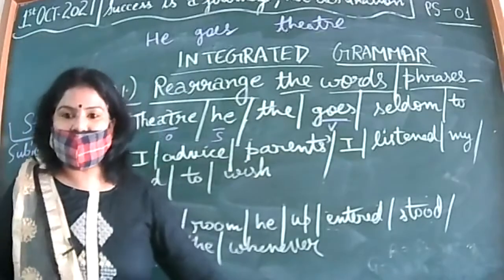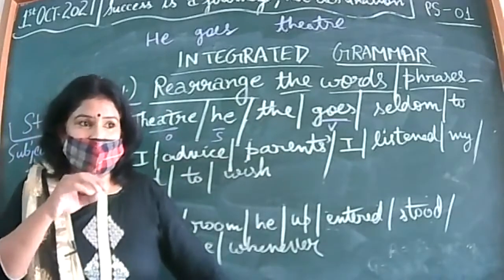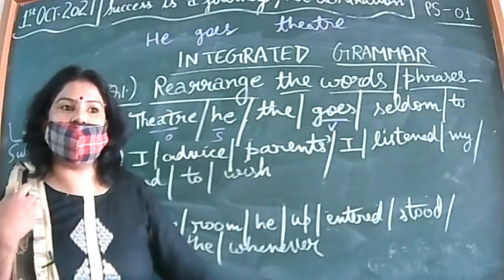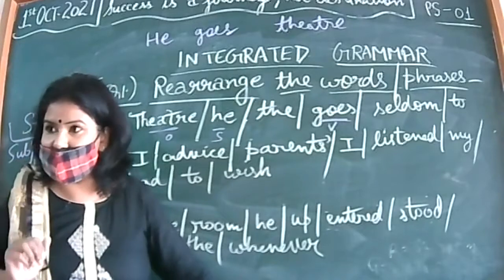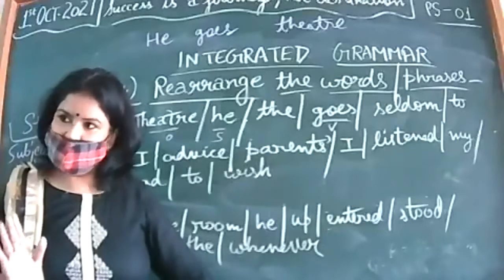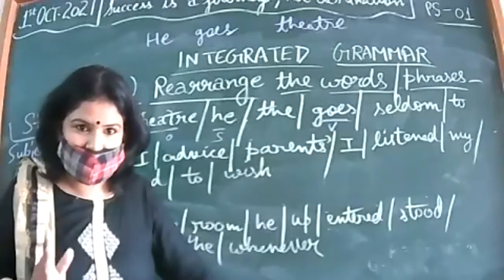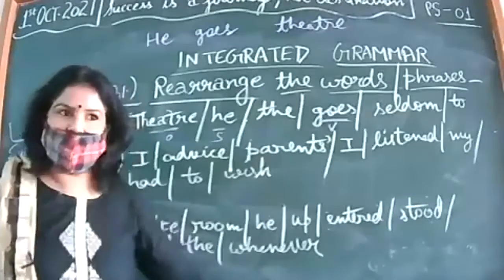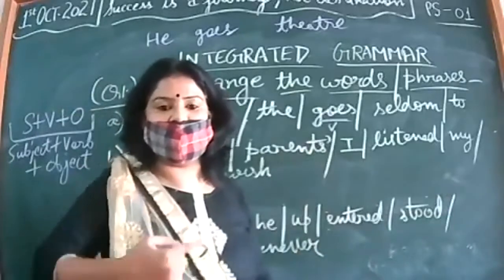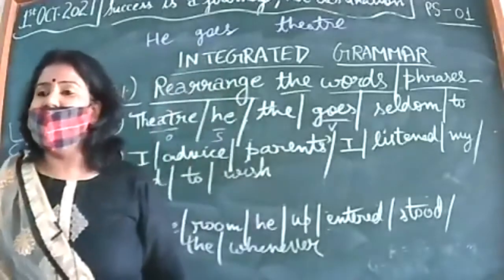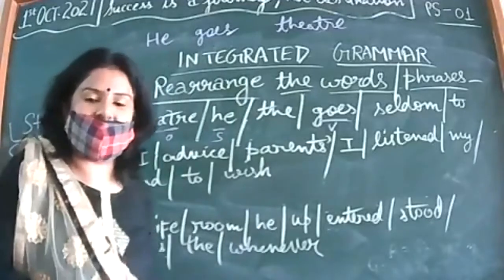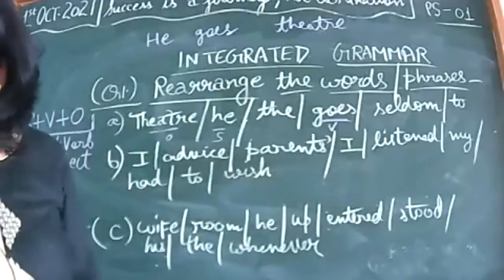It should be logically correct as well as grammatically correct. For example, with jumbled words — monkey, man, banana — the answer was 'monkey jumped up on the man and snatched the banana.' Grammatically, 'man jumped on the monkey' is also correct, but logically it is not, because monkeys are fond of bananas and would jump on a man to snatch it. In rearrangement, you have to be careful for both grammatical and logical correctness.